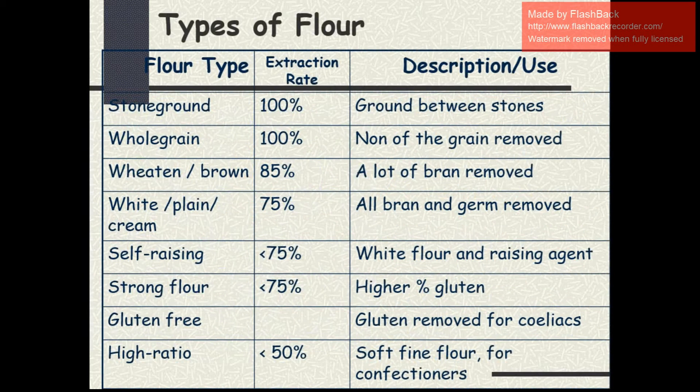The various types of flour depend upon the milling process and show the extraction rate of the flour. Stone ground is a traditional method — you get 100% recovery of the cereal grains, ground between two stones. Whole grain also gives 100% recovery; none of the grain is removed. Beaten or brown flour gives 85% of the grain, with a lot of bran removed. White, plain or cream flour gives 75% recovery, with all bran and germ removed. Other types include self-rising, strong flour and gluten-free flour.